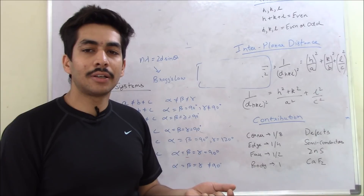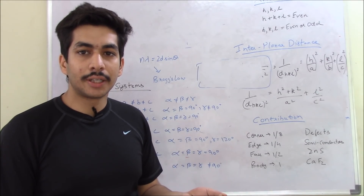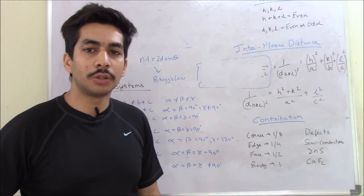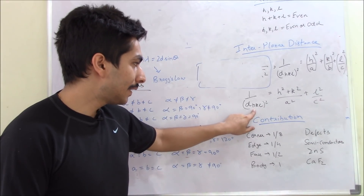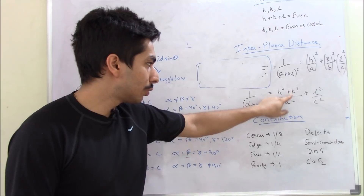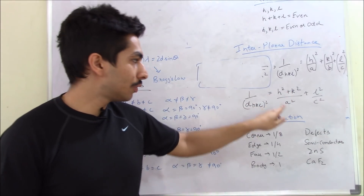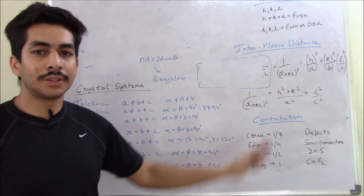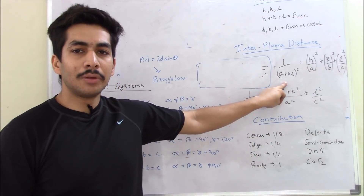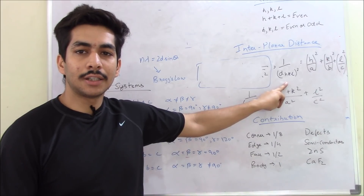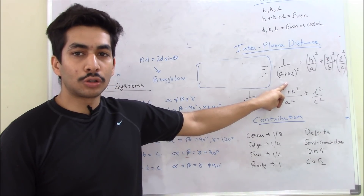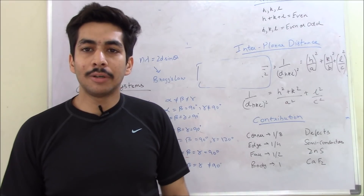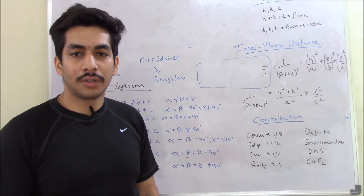For a tetragonal system, two sides are equal and the third is not, so A = B ≠ C. In that case we write: 1/D_HKL² = (H² + K²)/A² + L²/C². Because two edge lengths are equal, we can combine two Miller indices over A², then add L²/C². This is applicable for tetragonal systems. The original simpler formula — A / √(H² + K² + L²) — was only applicable to cubic systems where all three sides are equal.